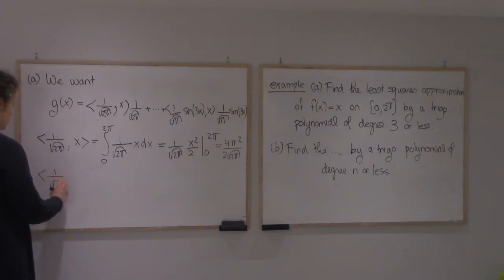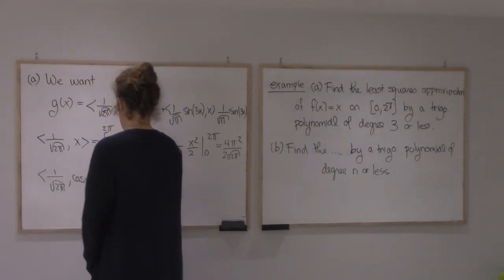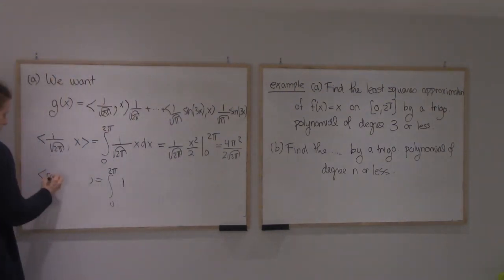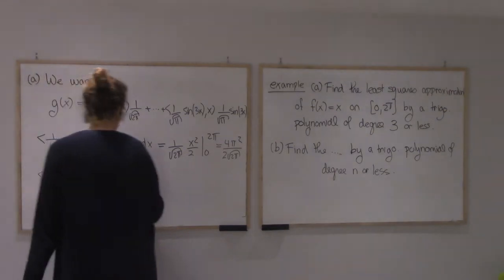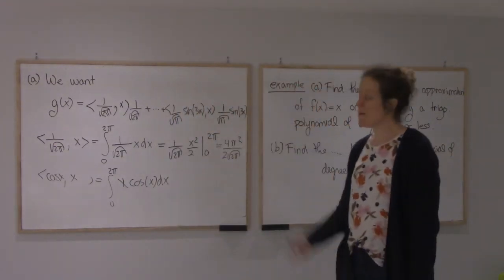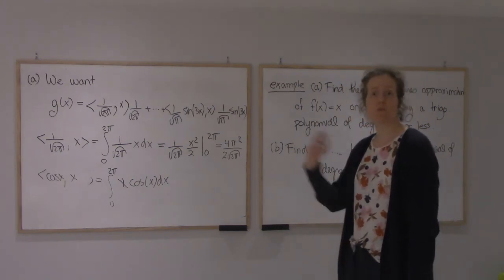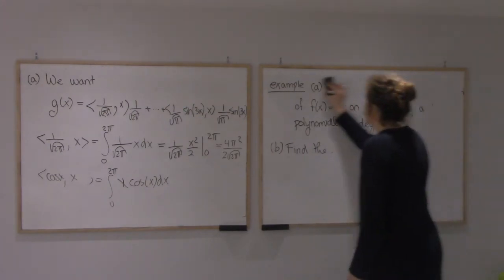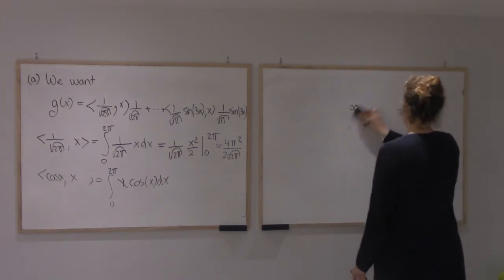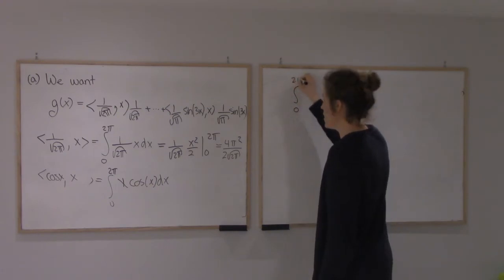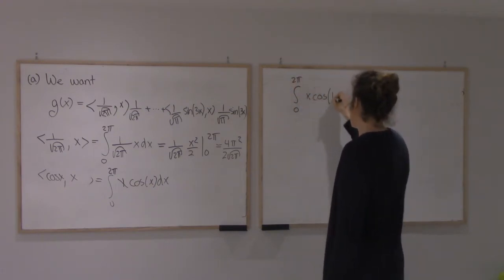Let's compute the next one. We should look at 1 over root π cos of x times x. So I'm getting the integral like this. And I'm going to have to compute this with cos of x, cos of 2x, cos of 3x. Let's do it in general. And that's going to help me for b as well.